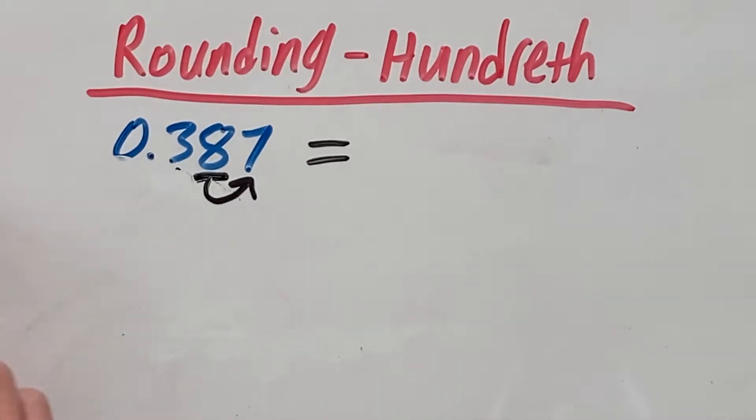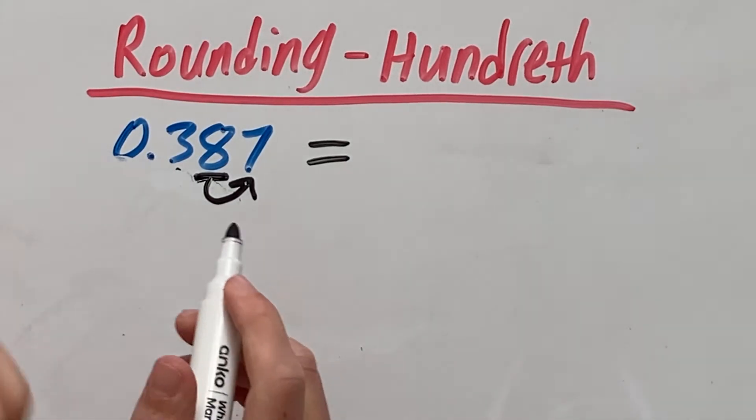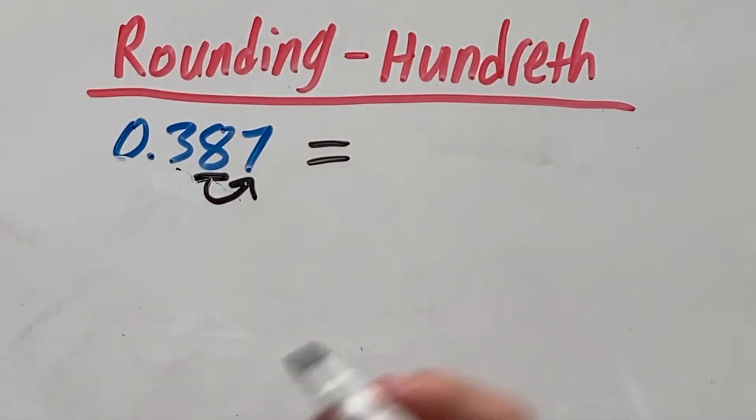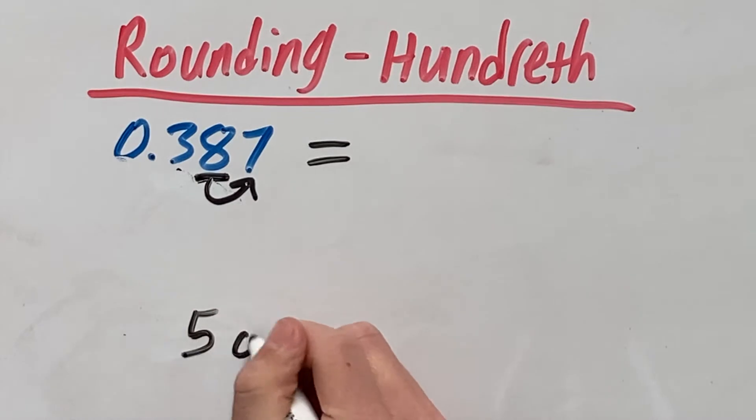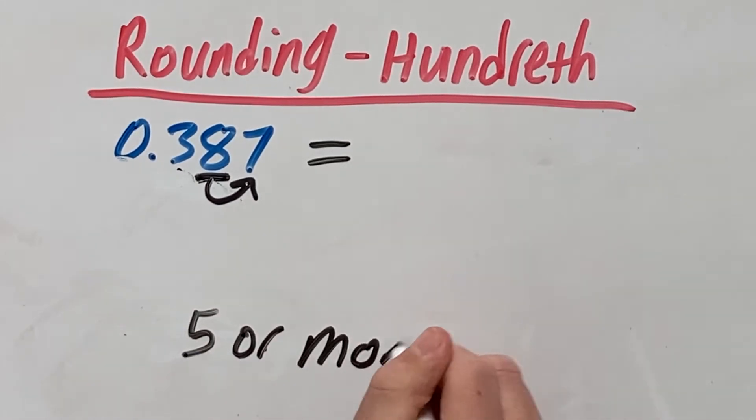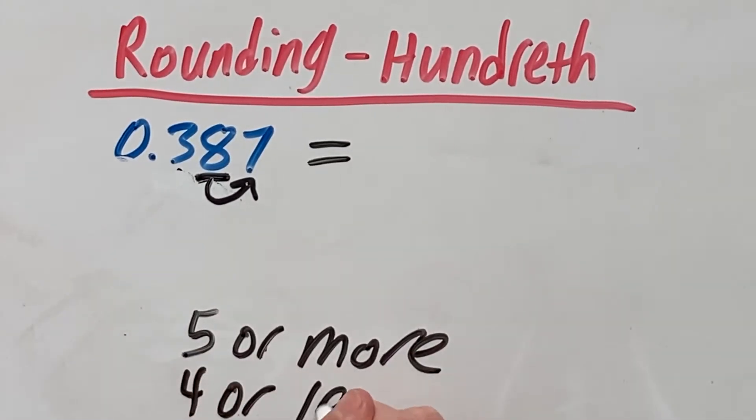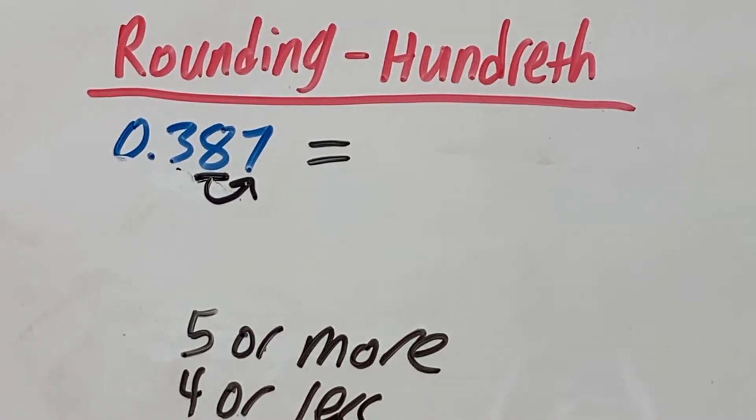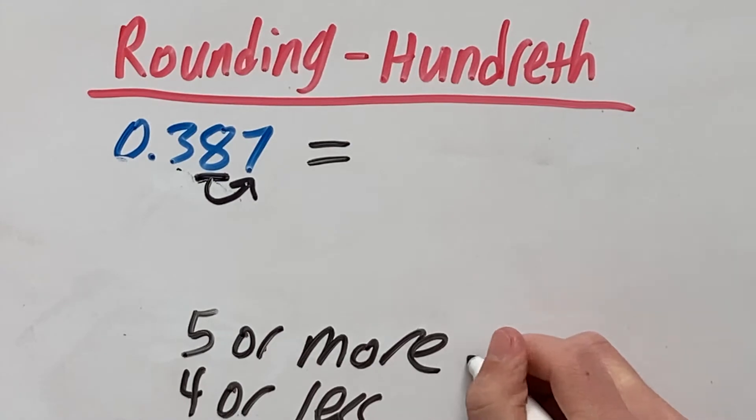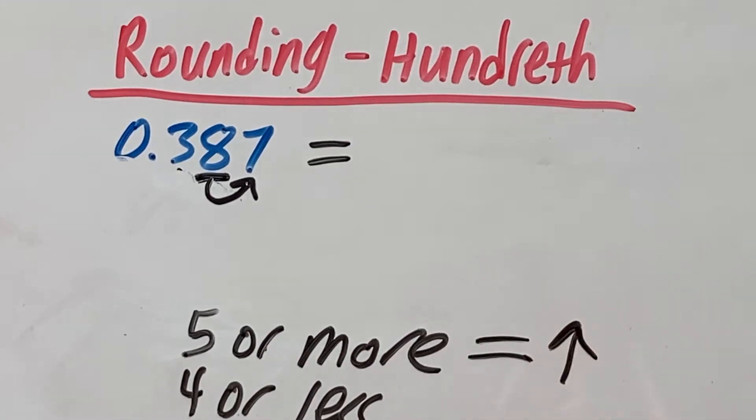Here we're going to look if we're going to round this 8 up or down by looking at the number right next door, which is our 7. We want to see if this number right next door, in our case 7, is 5 or more or 4 or less. If it is 5 or more, we are going to round up. And if it's 4 or less, we're going to round down.